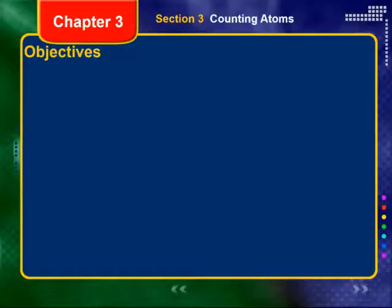All right, chemistry, let's take a look at Chapter 3, Section 3. We are now going to be talking about counting atoms — counting how many atoms there are present in a sample. And no, you do not actually count each one. We have a secret trick we're going to talk about.